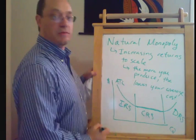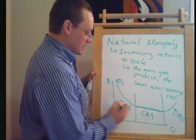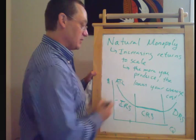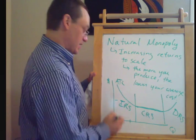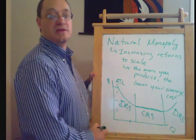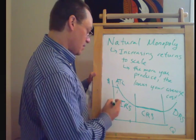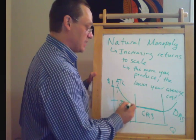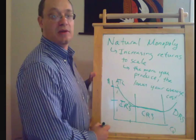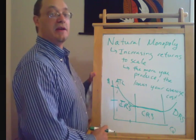So if we have increasing returns to scale, then obviously the firm that gets big first has a cost advantage over the firm that has not yet gotten big. So that perpetuates their advantage and they become bigger and bigger and bigger, and eventually they take over the entire market.